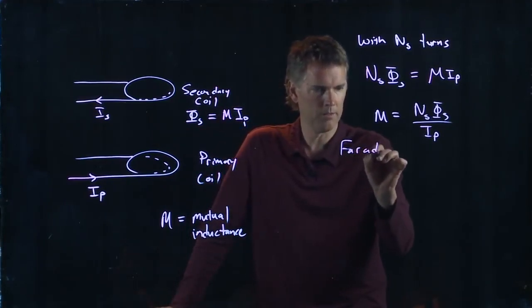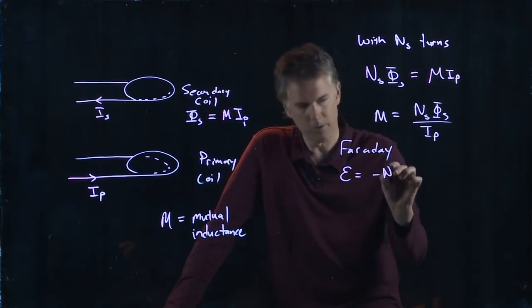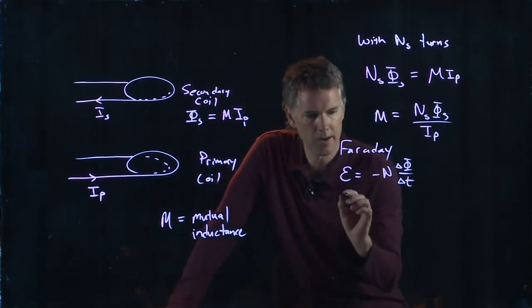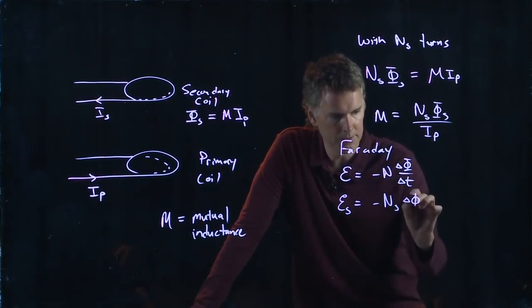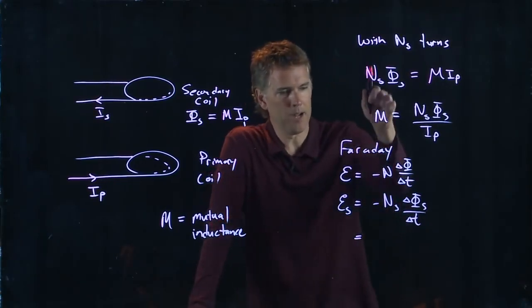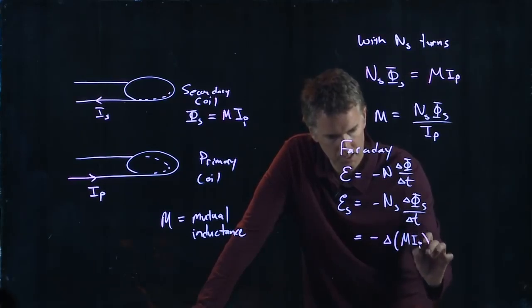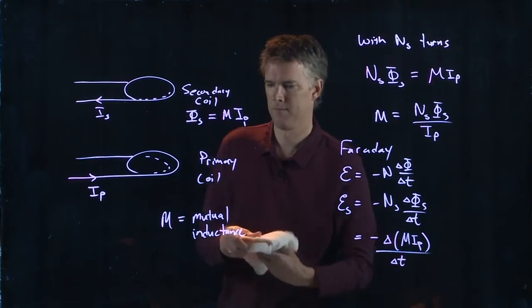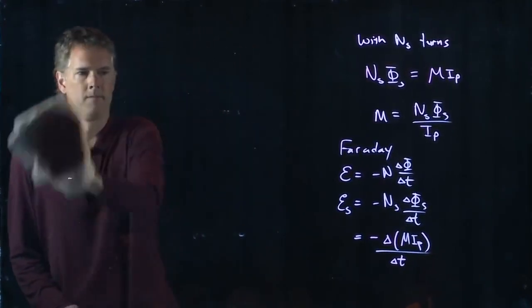But Faraday told us that if you're intercepting flux and it's changing in time then you develop an EMF. The EMF we said was minus N delta phi over delta T. And so in the secondary the EMF which develops is minus N_S delta phi_S over delta T. So this is minus delta M I_P, but we know what N_S phi_S is. And so this becomes minus delta M I_P divided by delta T.